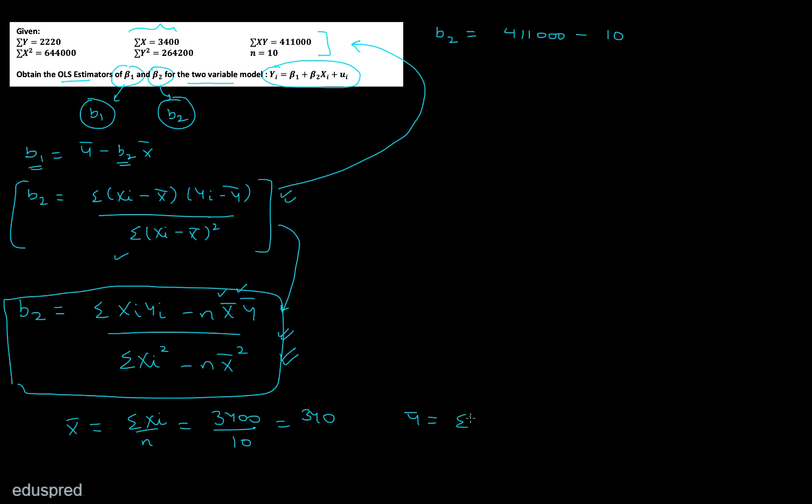So x bar is 340, y bar is 222. We can put the value of x bar and y bar here. So this is your numerator. And in the denominator the first term is summation of xi squared which is 64,400, and the second term is n x bar squared, so n and the square of x bar, 340 squared. And if you solve this you will get that B2 equals 0.6714.